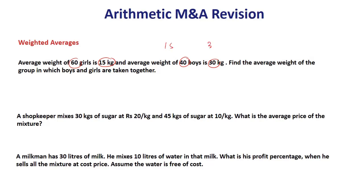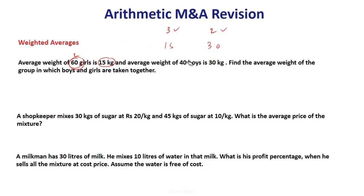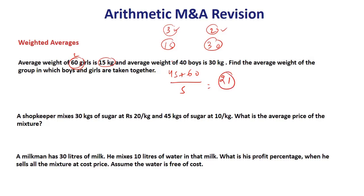The average of 60 girls is 15 and average of 40 boys is 30. The number itself is not important, but the ratio is 60 to 40, which is 3 is to 2. These are called the weights, and hence when you take the average with these weights it is called a weighted average. So 3 into 15 is 45, 2 into 30 is 60, divided by 3 plus 2 equals 5. So the weighted average becomes 21.